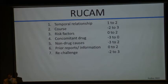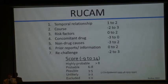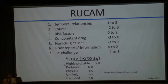The RUCAM point score summary has seven domains. The total score can range from negative values up to 13. You are then assigned a likelihood of drug-induced liver injury: highly probable, probable, possible, unlikely, or excluded. This system has been in use now for some 30 years.